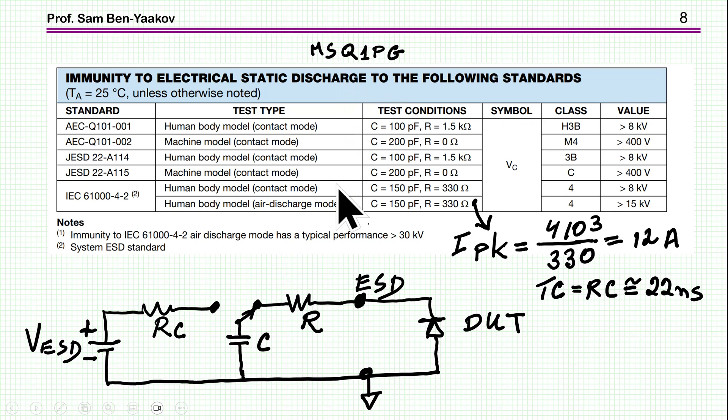And here they are actually showing a table which is related to this ESD issue. And what we see here is various tests that you can subject a unit to. And let's have a look at the last one, and it says C150 picofarad, R330 ohm, and then the voltage is larger than 15 kilovolts. That's a bit high, usually it'll be like 4 kilovolts. And this is to the standard test ESD, which is IEC61000-4-2.